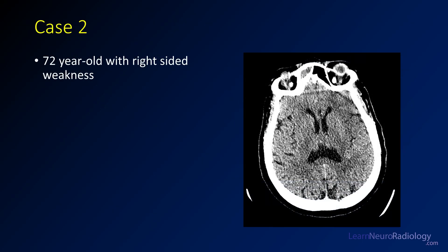Today we're looking at a case of a 72-year-old with right-sided weakness. Here we have a non-contrast head CT. A little bit grainy, a little bit hard to see. Looks like on the right, we have pretty good gray-white differentiation.